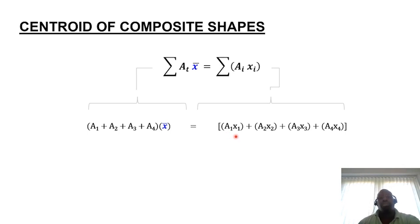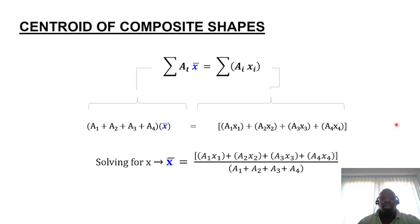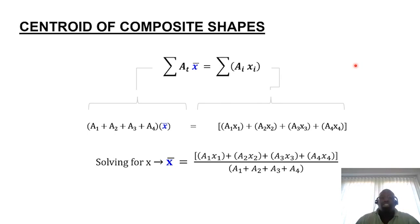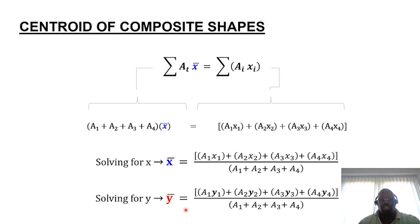So you've got x1 times A1, plus A2 times x2, plus A3 times x3 — these define the first moments. To solve for x, you divide the sum of all the moments of the segmented forms by the total area of the shape. That's how you predict the global coordinate in terms of x. You do likewise for y — the total sum of all individual moments with respect to y divided by the total area of the form. Fairly easy.